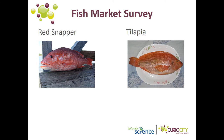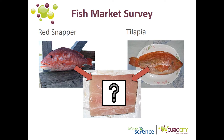To review, a market survey is a process that can be used to determine if the species of plants or animals used in food products are identified correctly. The species of whole fish, like the ones you see here, are usually pretty easy to identify. However, once fish are processed, it becomes very difficult to identify their species and they may become mislabeled.